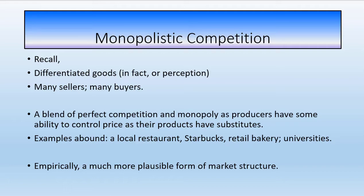Examples of monopolistic competition are everywhere, which is why this form of market structure explains a lot. Examples include local restaurants, which strive on having the best recipes, nice atmosphere, good location, and a good time — but there are close substitutes nearby. Other examples would be Starbucks, a retail bakery, and even universities.